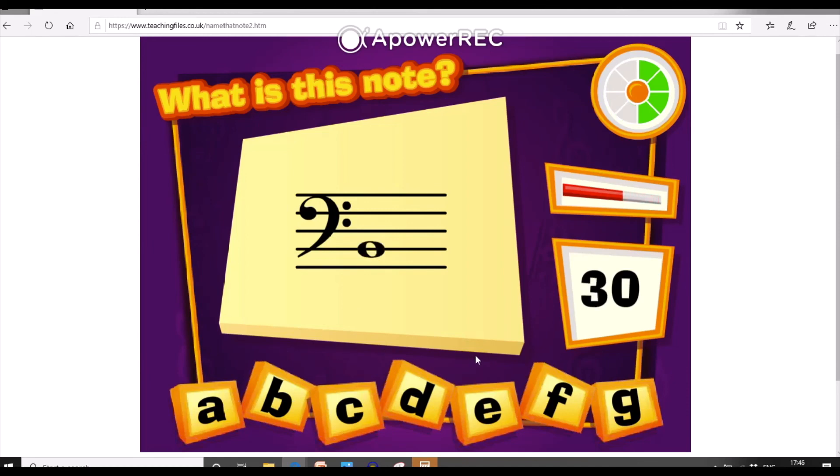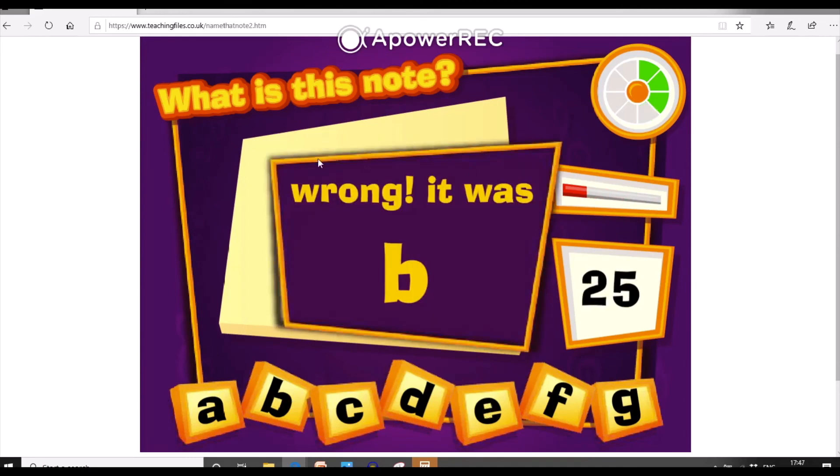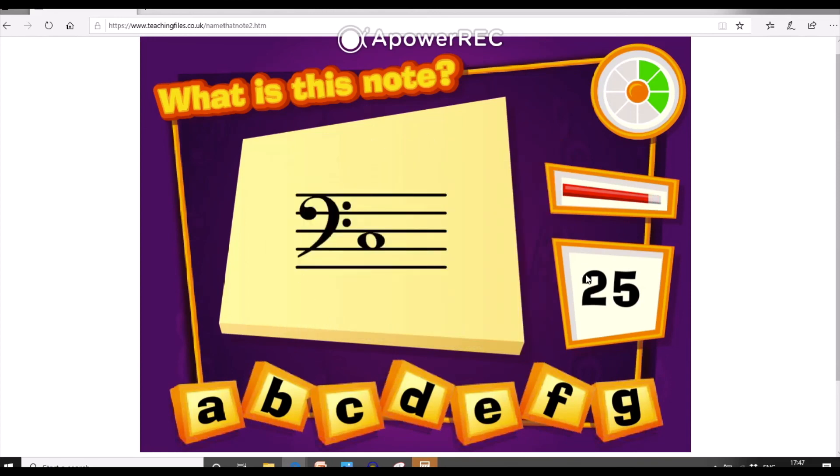This time I'm going to deliberately give the wrong answer. I'm going to say that it's an E. You'll see that it tells me what the right answer was, but can you also see it's taken five points off my score?